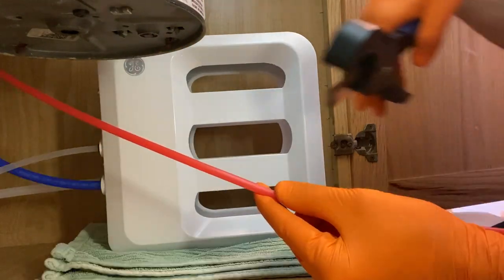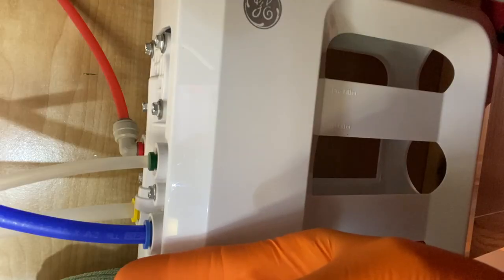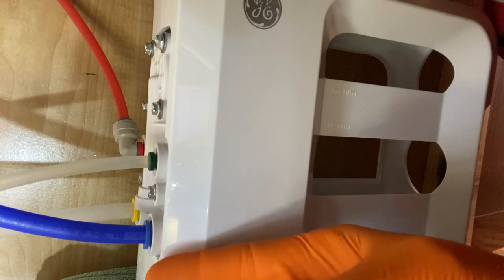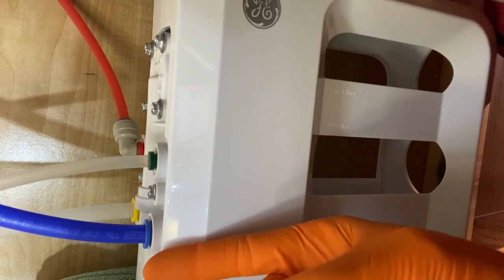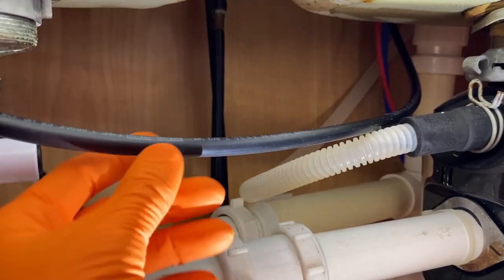And now the red line. Re-secure the blue line and the red line just by inserting the lines in the press fit fitting and adding some friendly forward pressure to lock those lines in place in the press fit fittings.